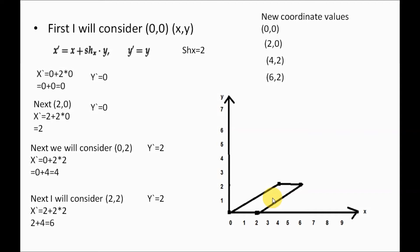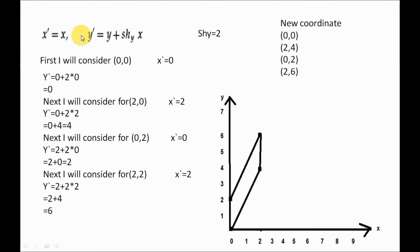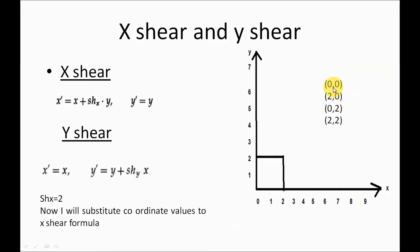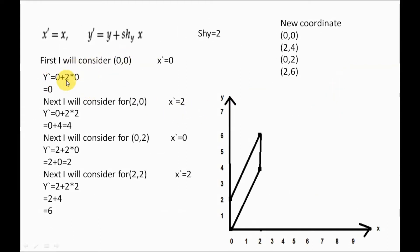Now we consider shearing with respect to the y-axis. The formula is: x' = x, y' = y + Shy × x. The shearing factor Shy = 2. For coordinate (0,0): y' = 0 + 2×0 = 0, x' = 0. New coordinate: (0,0).